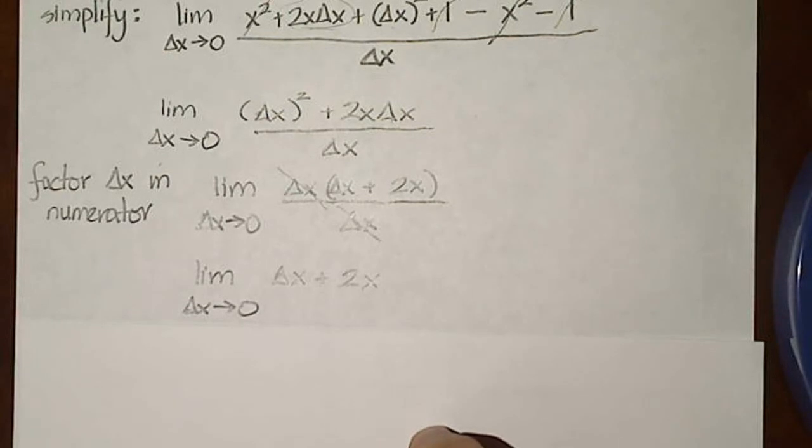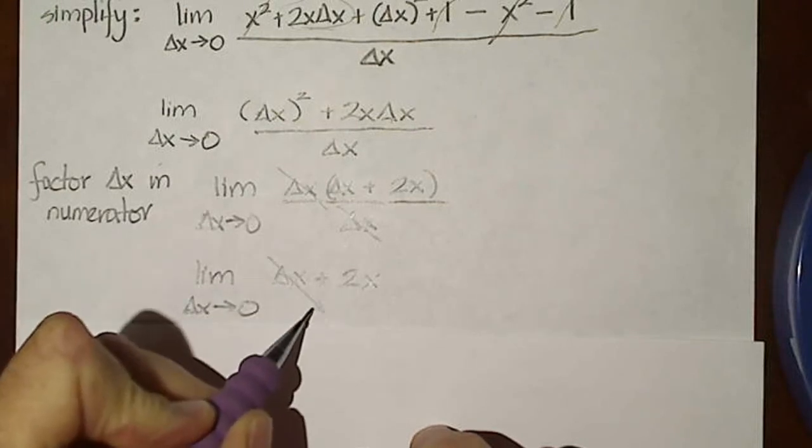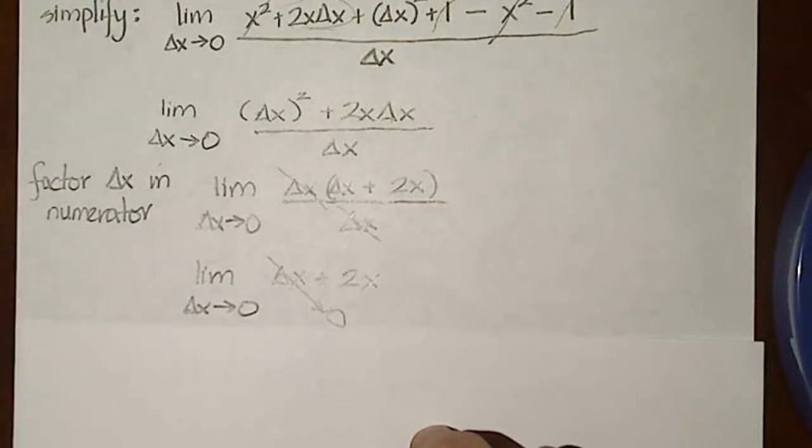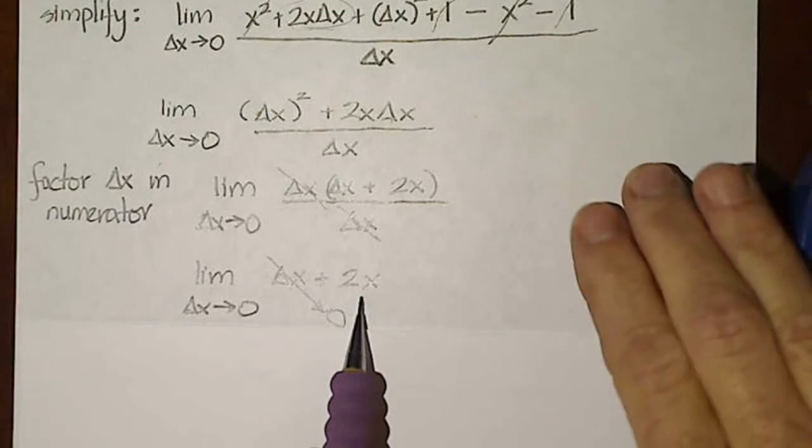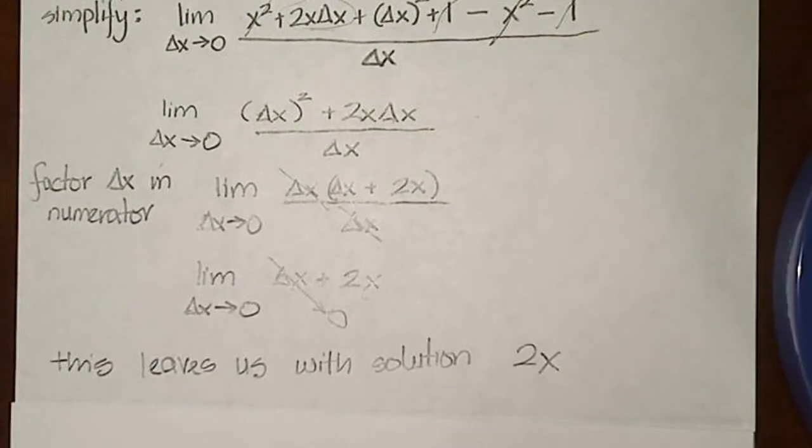So now I've done all the simplification algebraically that I could, let's try direct substitution. If I try direct substitution, that means this value goes to zero and this is unaffected. So that leaves me with a final answer for my limit of 2x. That is the solution to this problem.